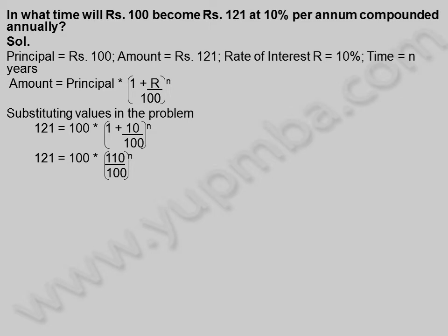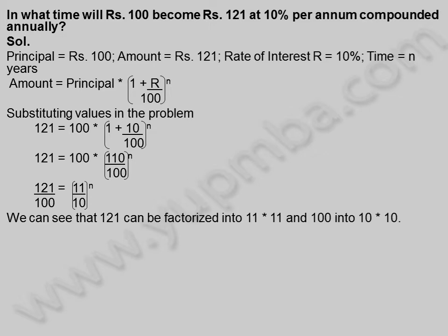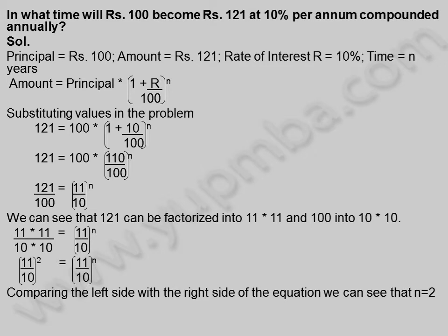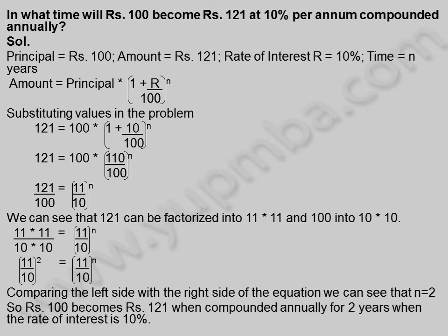121 is equal to 100 into 110 by 100, whole power n. So 121 by 100 is equal to 11 by 10, whole power n. We can see that 121 can be factorized into 11 into 11, and 100 into 10 into 10. So 11 into 11 divided by 10 into 10 is equal to 11 by 10, whole power n. Therefore 11 by 10, whole square equals 11 by 10, whole power n. Comparing both sides, n is equal to 2. So 100 rupees becomes 121 rupees when compounded annually for 2 years.